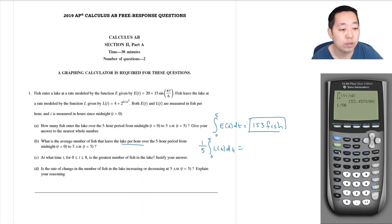So now I can do this: one divided by five, math 9, and I'm integrating from zero to five. I did this as my second y-vars, function number two, over dx. I get this is 6.06 fish per hour.